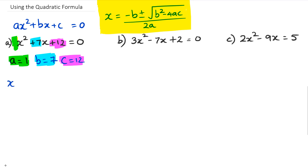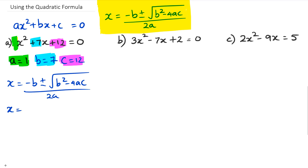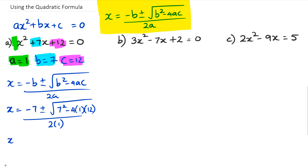So we write down x equals negative b plus or minus the square root of b squared minus 4ac, over 2a. Then x is equal to — now b is equal to seven — so we've got negative seven plus or minus seven squared minus four times one times twelve, and that's all divided by two times one. Seven squared is 49, minus 48 equals just one, divided by two times one which is two.